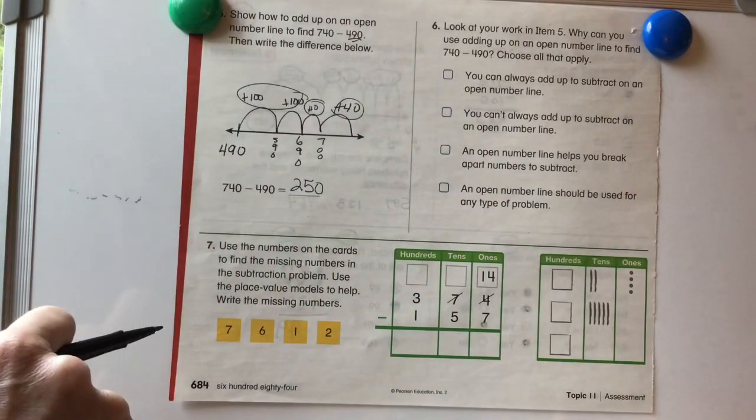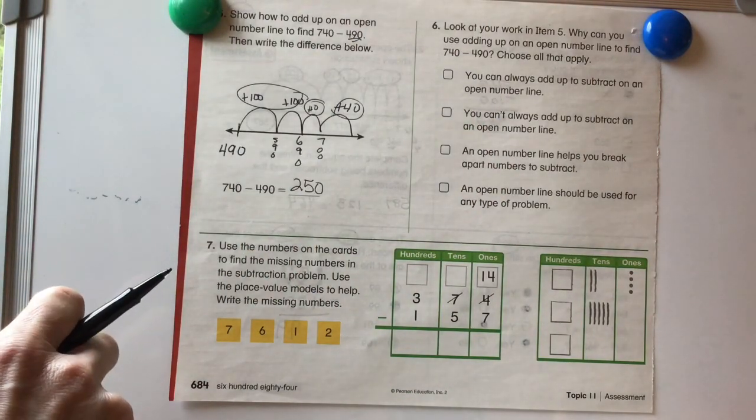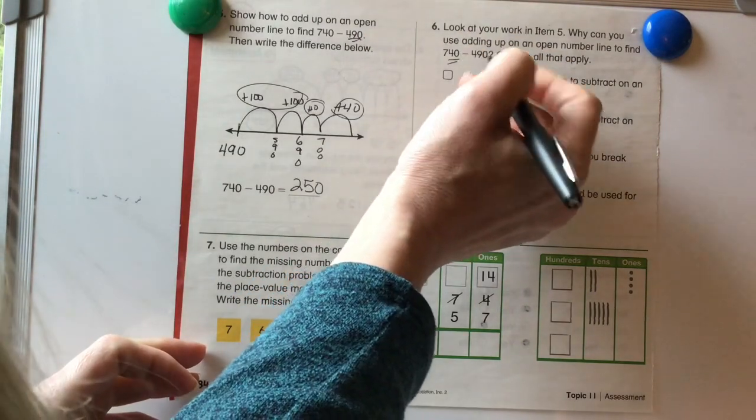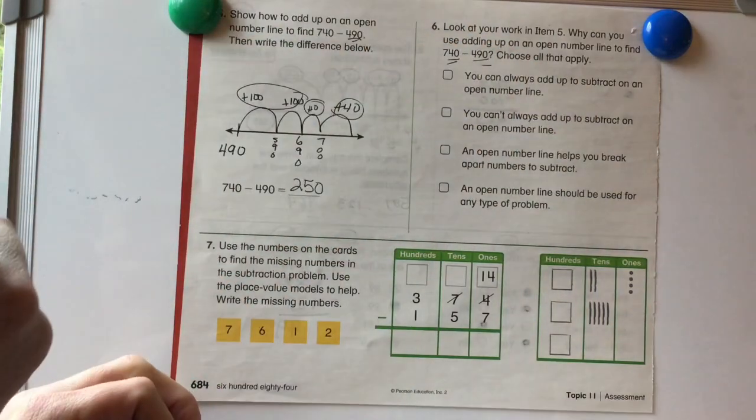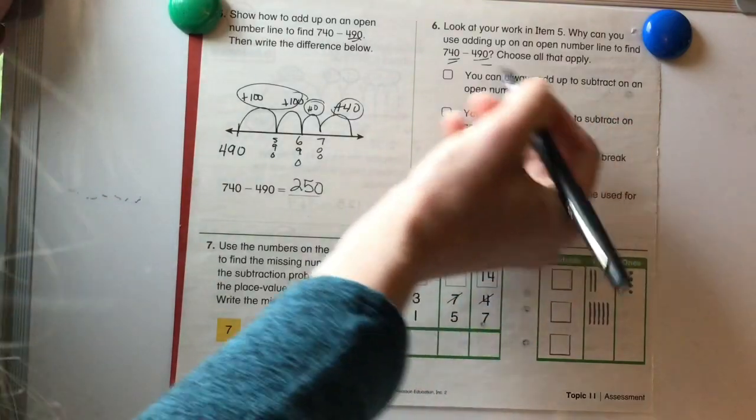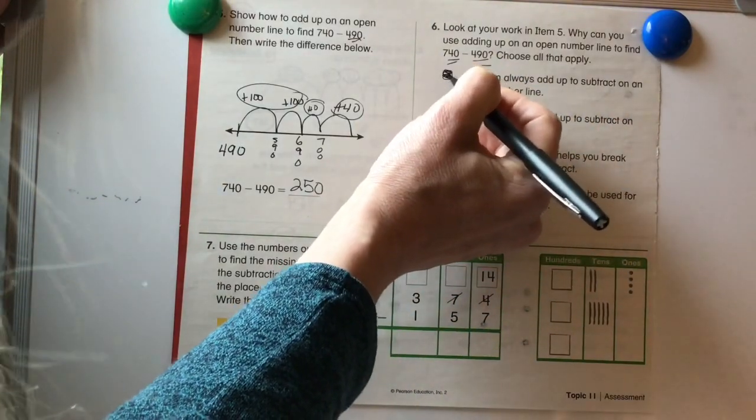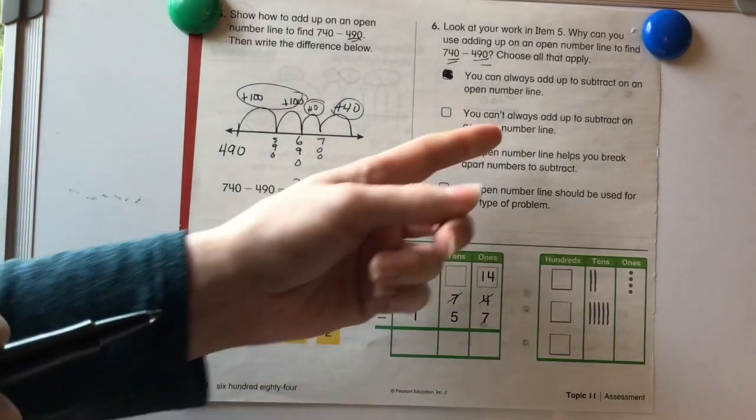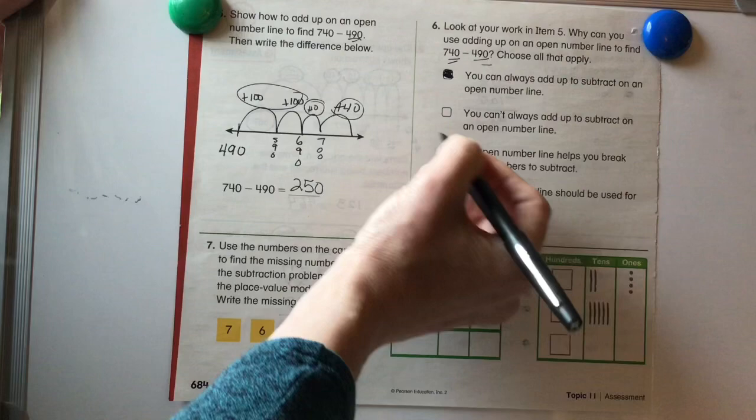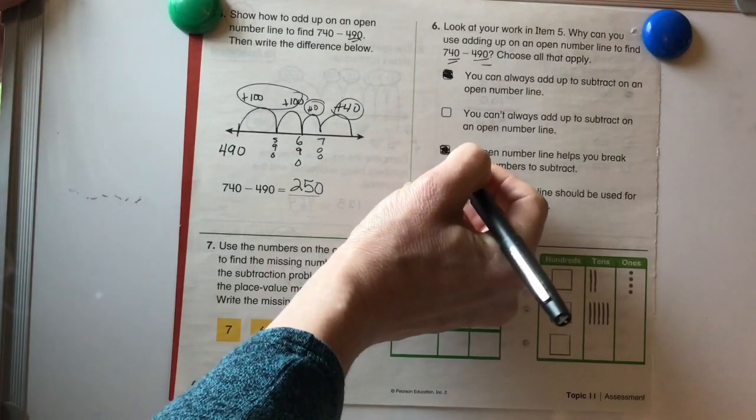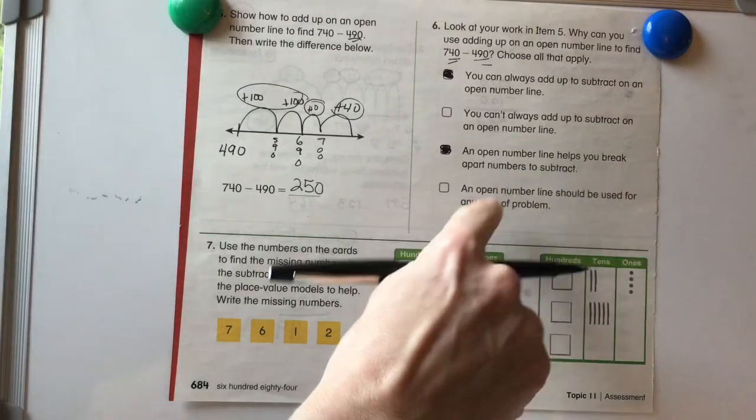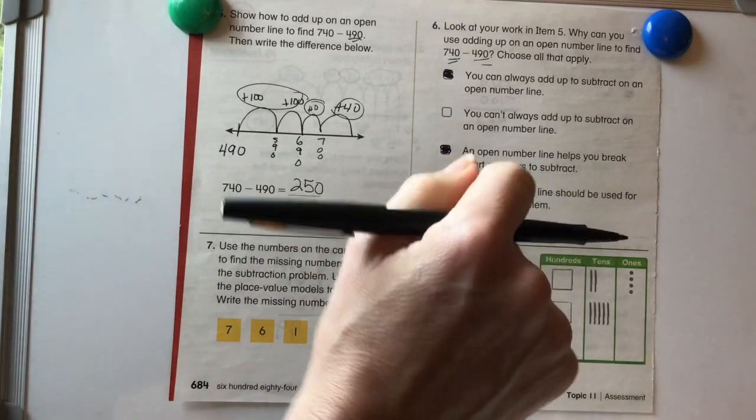Okay. Number 6. Look at your work in item 5. Why can you use adding up on an open number line to find 740 minus 490? So this is exactly what we did here. So we know that you can always add up to subtract on an open number line. An open number line helps you break apart numbers to subtract. Exactly. Because that's what we're doing is breaking apart numbers. An open number line should be used for any type of problem. Well, that's just personal preference. If you'd like to use it, you can. But you don't have to.